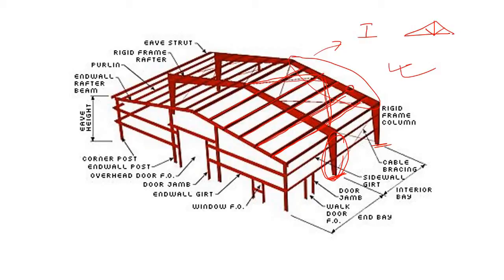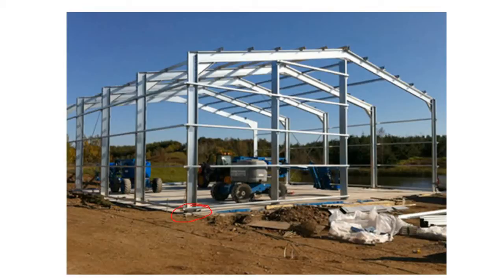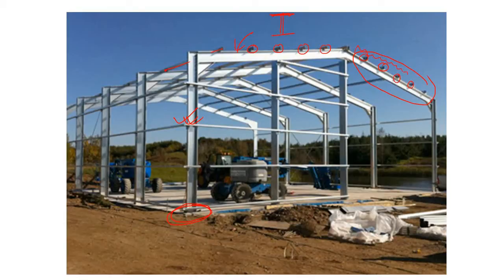Now let's have a look at how these members actually look in real life — very helpful if you're a beginner. Here you can see the ground and foundation, this is the column, and this is the rafter — an eye section. Above this rafter we have installed our purlins. The purlin installation is almost complete, and now it's time to install the roof sheeting over these purlins.